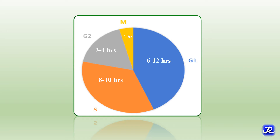Let's first talk about G1 phase, that is the growth phase or gap 1 phase. During this phase, RNA and protein synthesis occurs, and the biosynthetic activity of the cell increases, including those enzymes required in S phase. The duration is highly variable and it lasts for 6 to 12 hours.